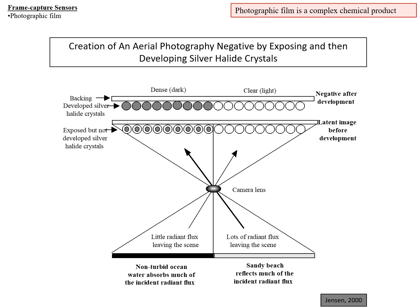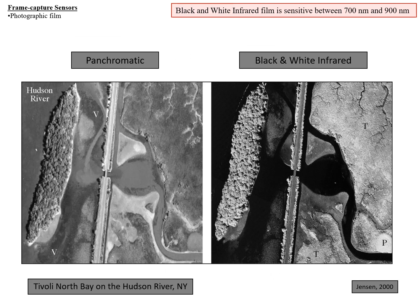You make a print from that and reverse the process to come up with a positive image. Here are two black and white, or grayscale, images. On the left is a panchromatic image, where all of the visible light has been recorded as a single image. On the right is a black and white infrared image showing brightness between 700 nanometers and 900 nanometers.